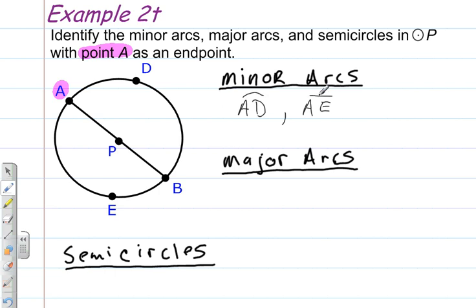Keep in mind, there are other minor arcs in here, but we have to keep in mind it's A as an endpoint. So, these would be the only two minor arcs created as A as an endpoint.